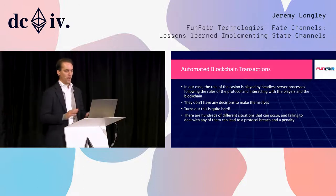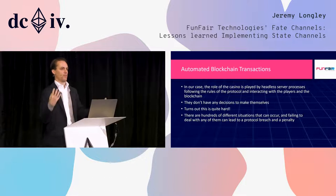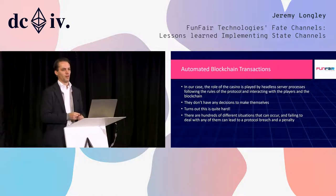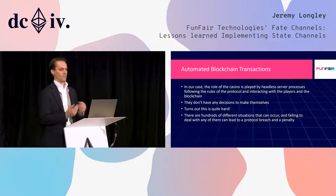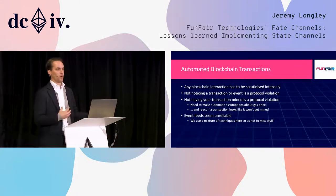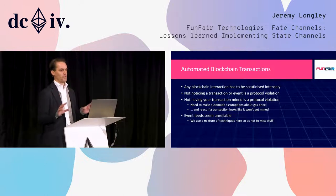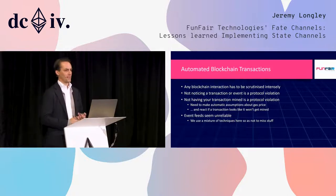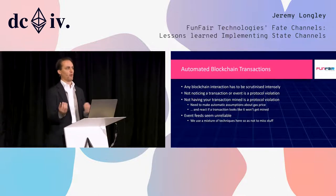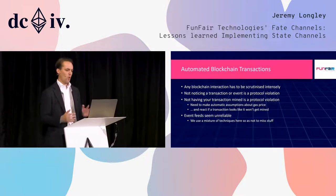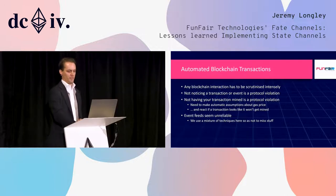We have written headless server processes that interact with the blockchain to provide the casino end of the game. They don't have decisions to make — they just need to follow the protocol. But this is quite hard. There are hundreds of different situations that can occur, and failure to deal with any of them is a protocol violation and a penalty. If you don't notice a transaction has been mined or an event issued, that's a protocol violation. If you try to mine a transaction and it doesn't get mined, that's a protocol violation. You need to make very careful assumptions about gas price and react if a transaction in the mempool is no longer going to get mined.